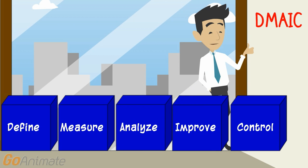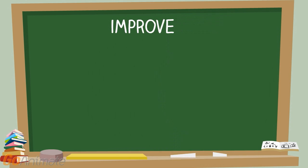In this module, we will provide a brief introduction of the Improve phase. Improve is the fourth phase of the DMAIC process.